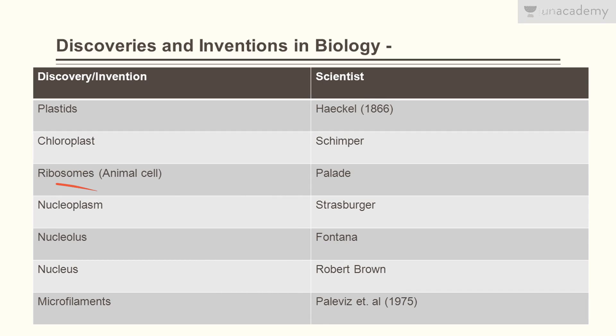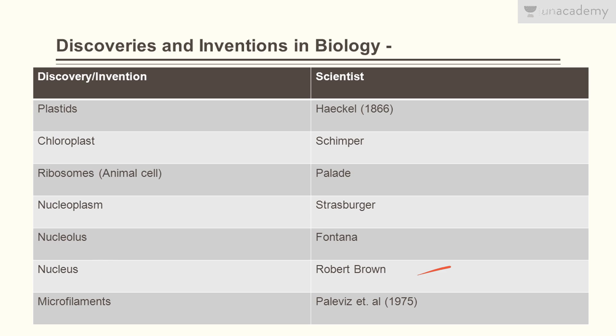Ribosomes of animal cells were discovered by Palade. Nucleoplasm was discovered by Strasburger. Nucleolus was discovered by Fontana. Nucleus was discovered by Robert Brown. Microfilaments were discovered by Pelham et al. in 1975.